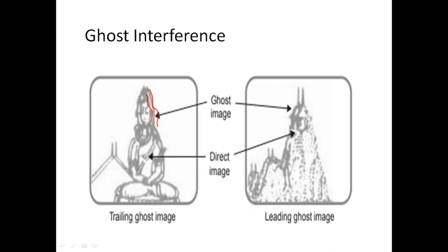On rare occasions the direct signal may be weaker, and the receiver synchronization is then controlled by the reflected signal. The ghost picture caused by the direct signal then appears displaced to the left, known as the leading ghost — with the ghost picture appearing on the left side. Thank you very much.